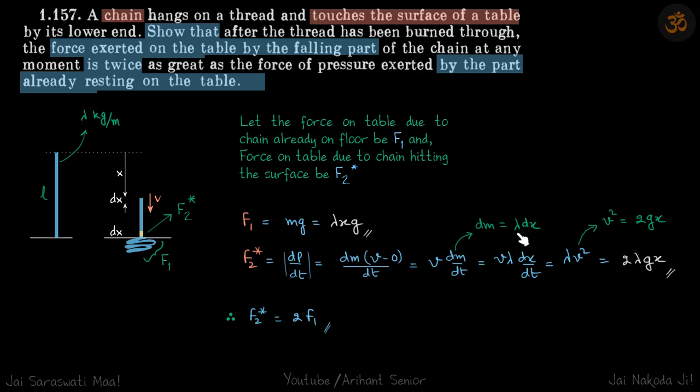Now dm we can write as lambda dx, so this becomes v lambda into dx by dt, and dx by dt is v, so this becomes lambda v square. Now the ground does not exert any force on the chain because a chain can only have tension; you cannot compress a chain. So that means the whole chain is in a free fall because there is no other external force, which means v square is equal to 2gx, our standard equation of motion. So we'll put that and we get f2 star as 2 lambda gx, which as we can see is twice of f1, which we wanted to prove.